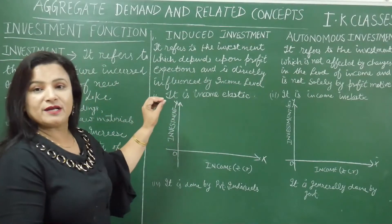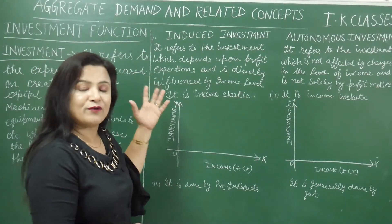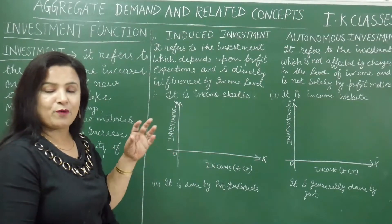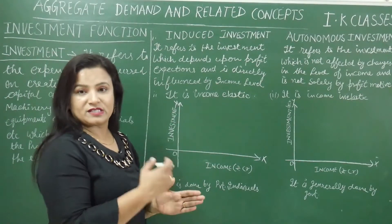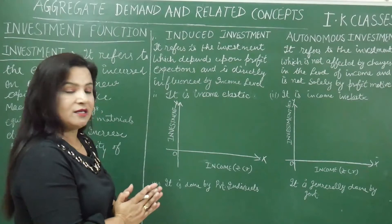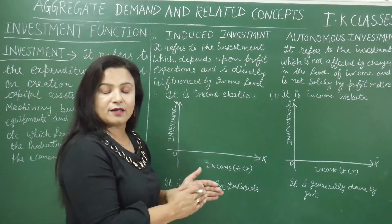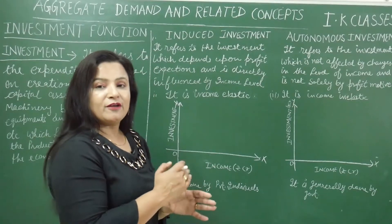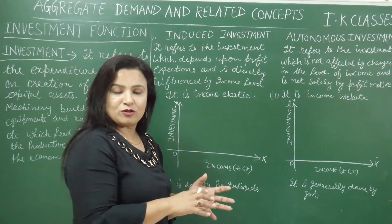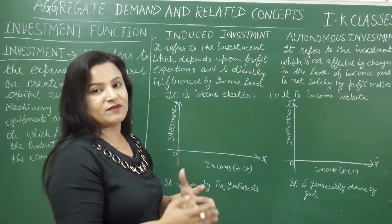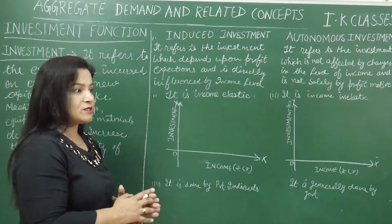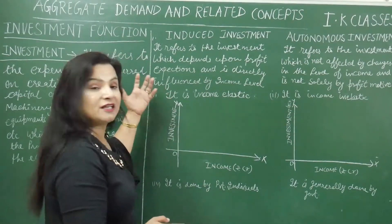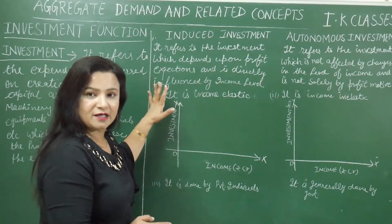Induced investment depends on profit expectations. If profits are more, then investment is more. It also depends on the income level, and the relationship between income and investment is positive. If income is more, investment will also be more; if income is less, investment will also be less. So there is a positive relationship between income and investment, meaning it is income elastic.